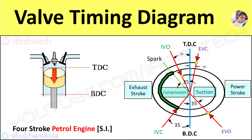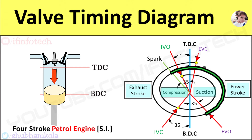The combustion of petrol releases hot gases which will increase pressure at constant volume. This high pressure and high temperature of the burnt gases forces the piston to perform the power stroke. This stroke is also known as the expansion or working stroke, and the engine produces mechanical work during the power stroke.